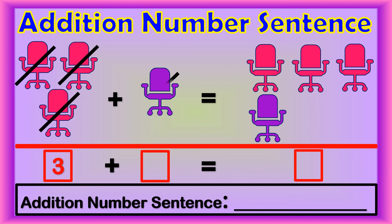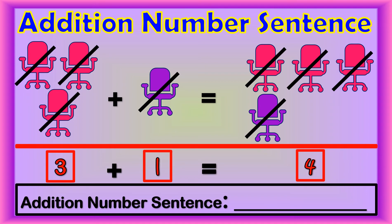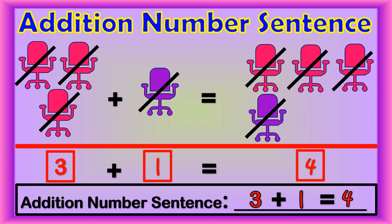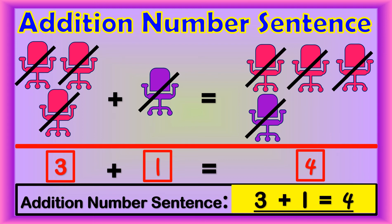Now the purple chair. One. One purple chair. Then count the pink and purple chairs together. One, two, three, four. There are 4 chairs in all. Now we write 3 plus 1 equals 4. So, the addition number sentence is 3 plus 1 equals 4.